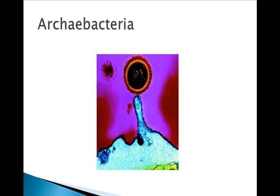The Archaebacteria: you need to know these characteristics, so write them down. They are unicellular, they live in extreme environments, they're prokaryotic, and they don't have any peptidoglycan in their cells. Some examples include methanogens, halophiles, and thermophiles.